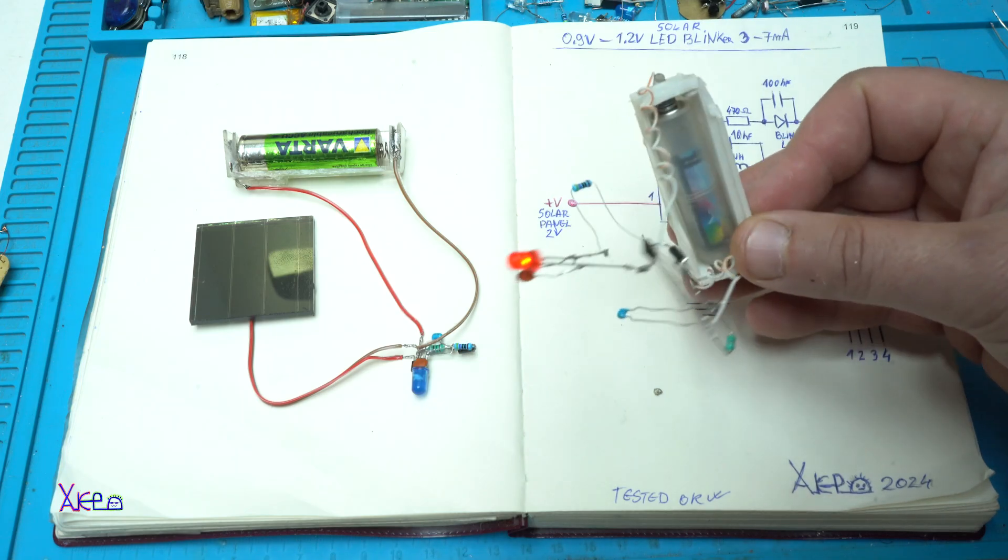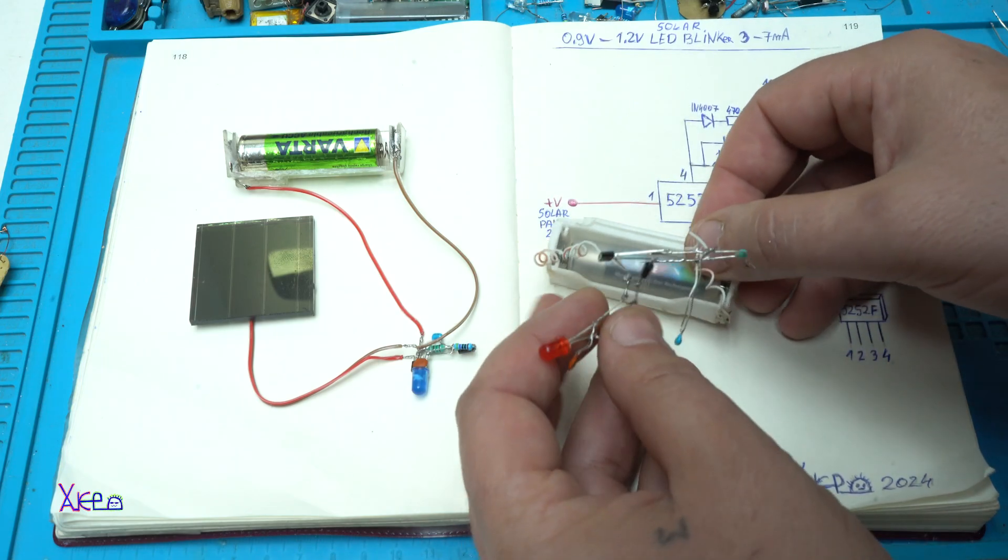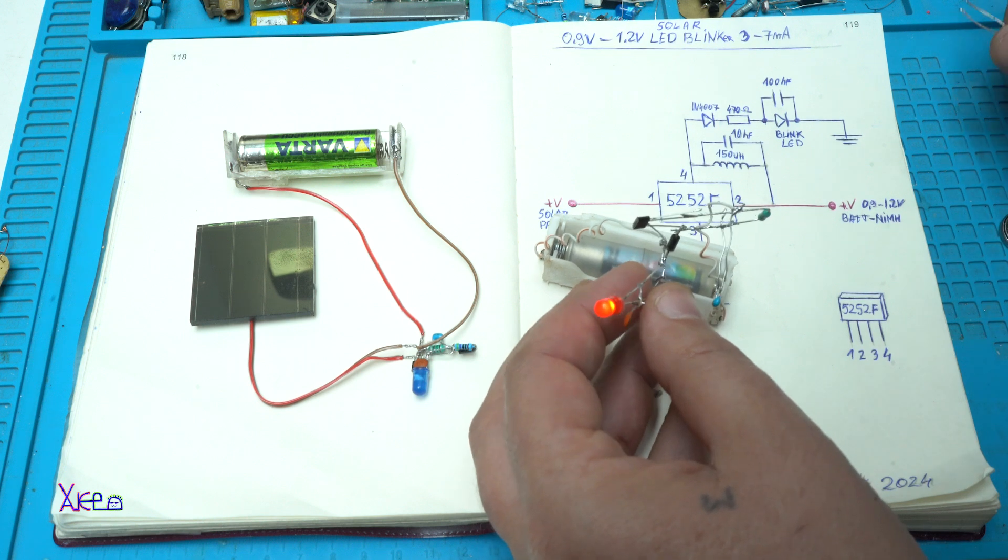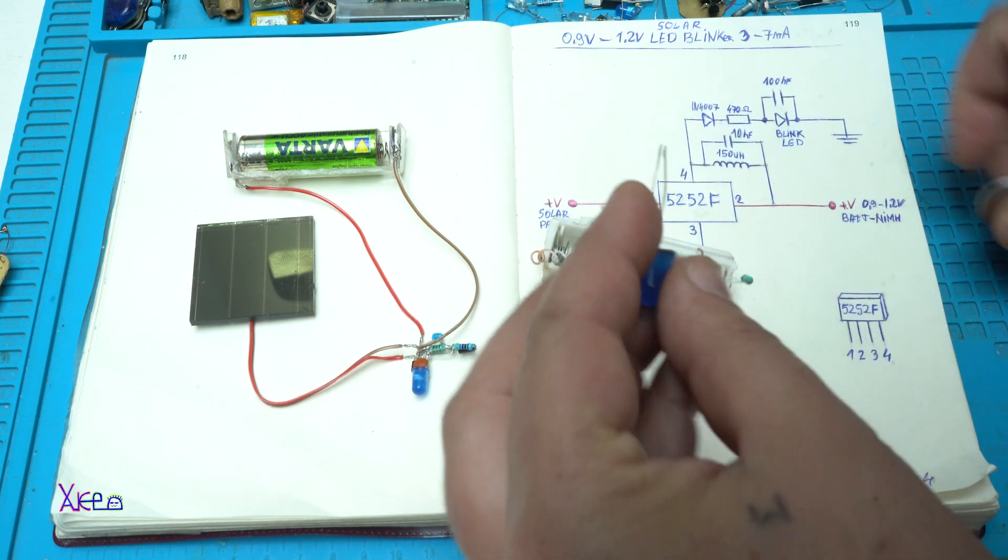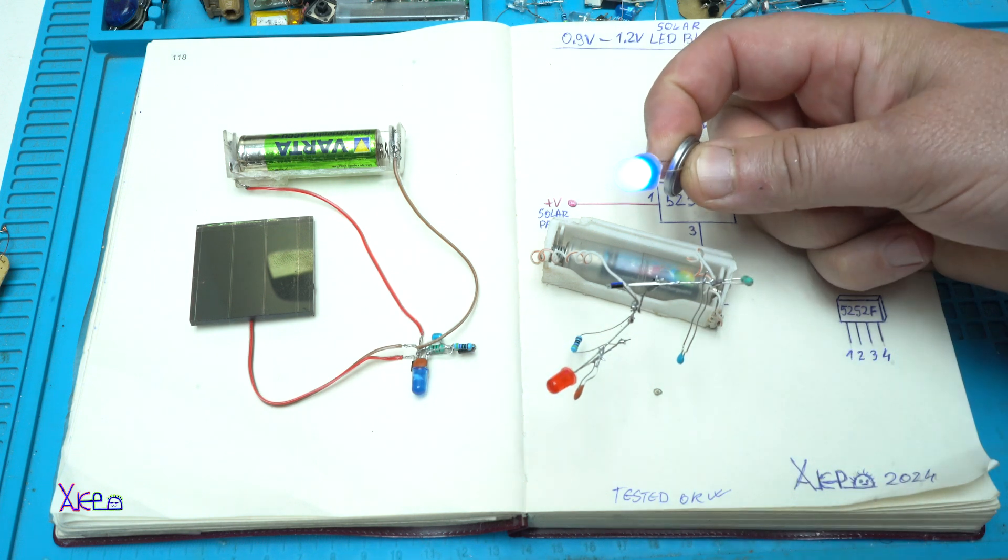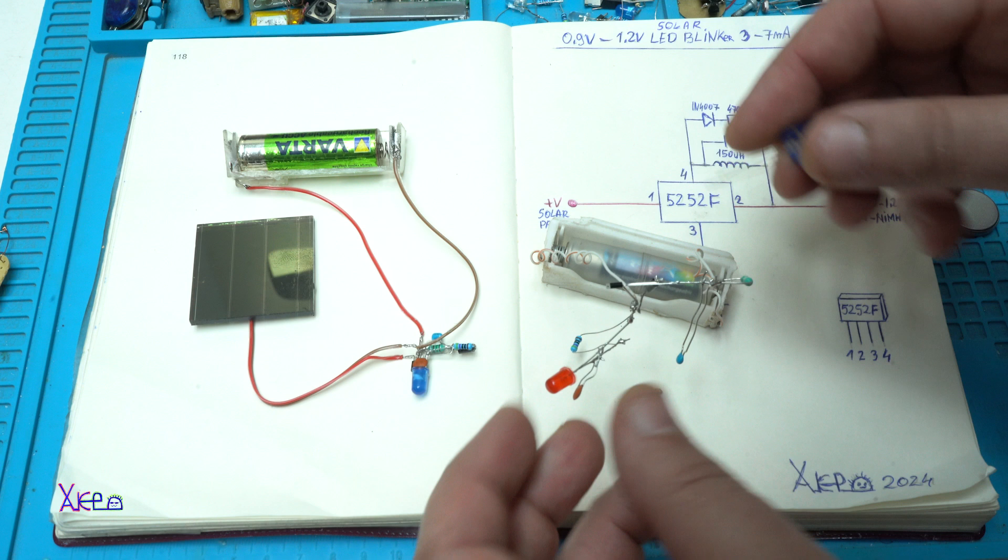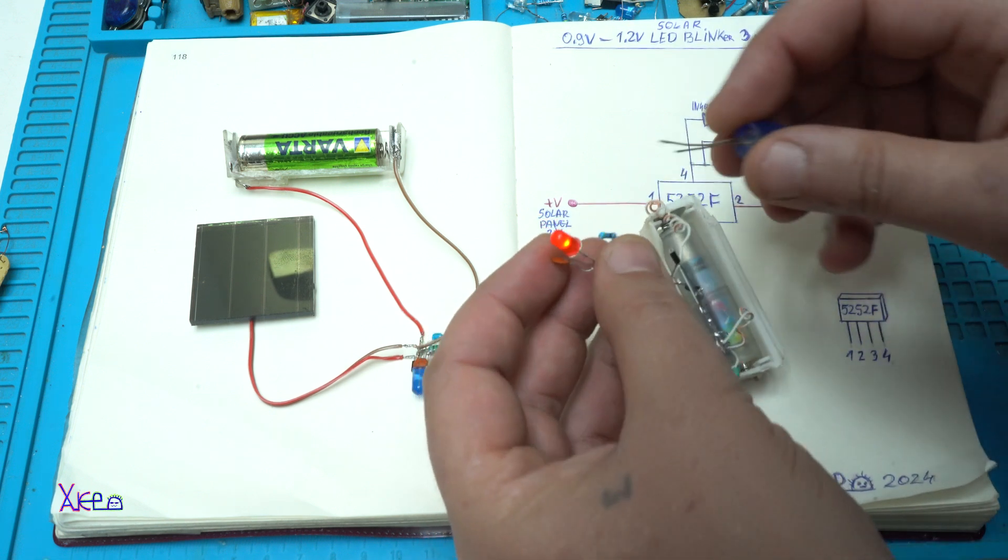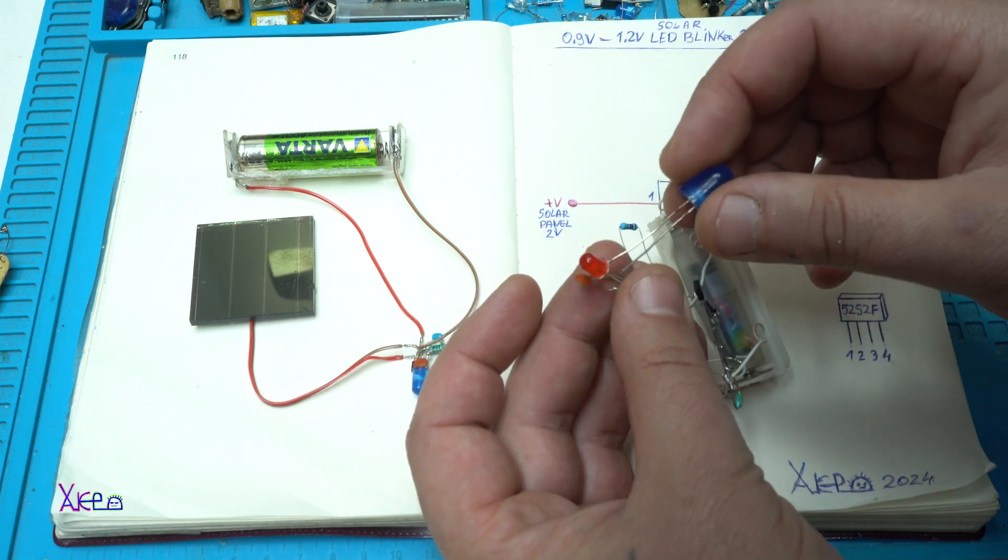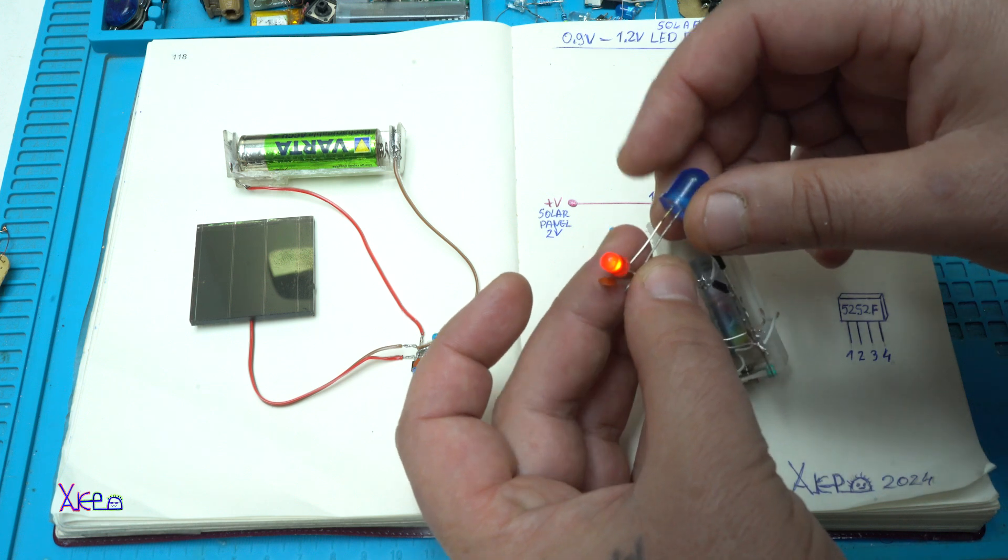And the last thing that I want to show you is that I am going to use this 8 millimeter LED, which is ordinary, not self-blinking. But when I hook it up in parallel with the red LED, just look—the blue LED starts blinking too.